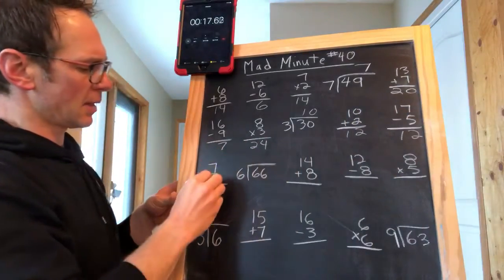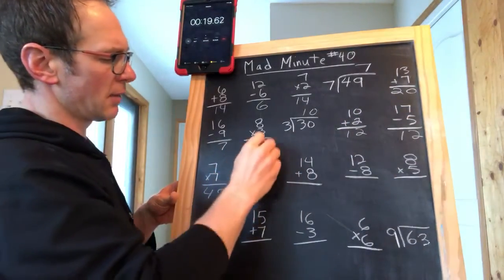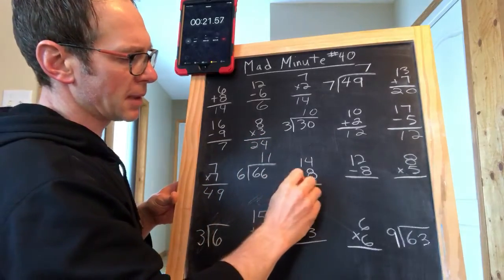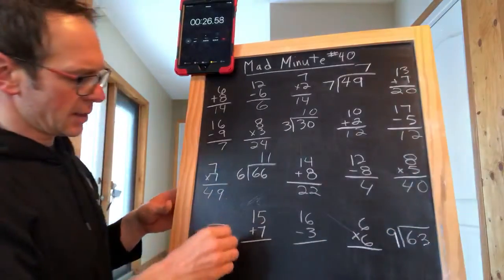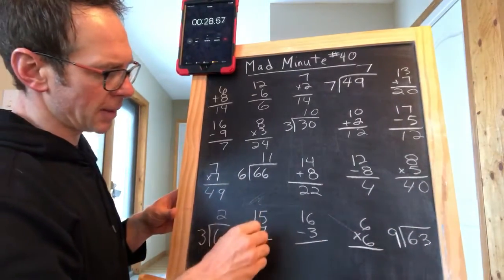7 times 7 is 49, 66 divided by 6 is 11, 14 plus 8 is 22, 12 minus 8 is 4, 8 times 5 is 40, 6 divided by 3 is 2, 15 plus 7 is 22.